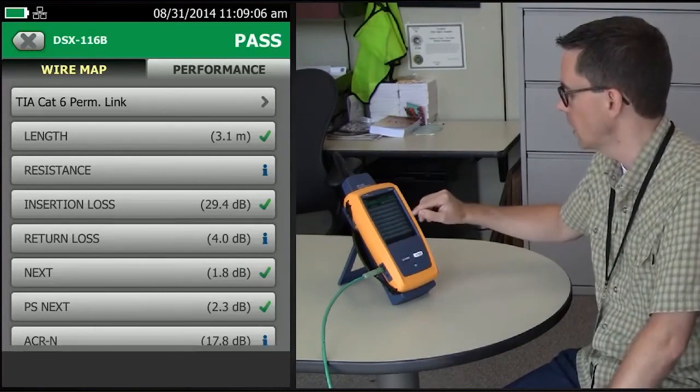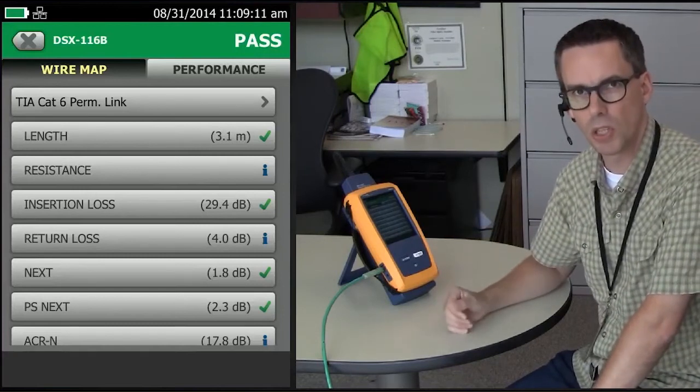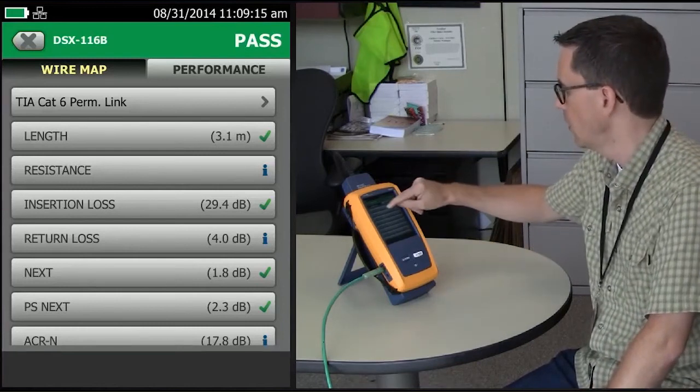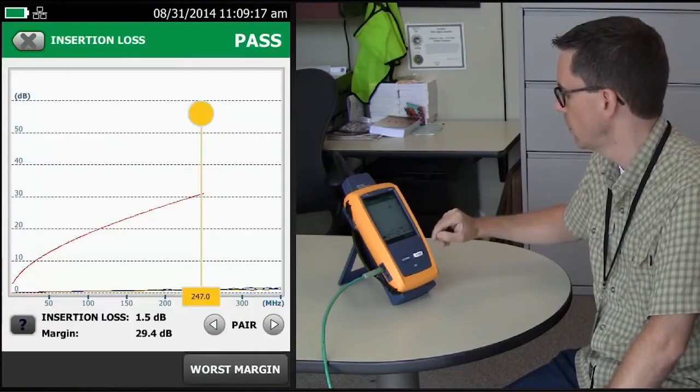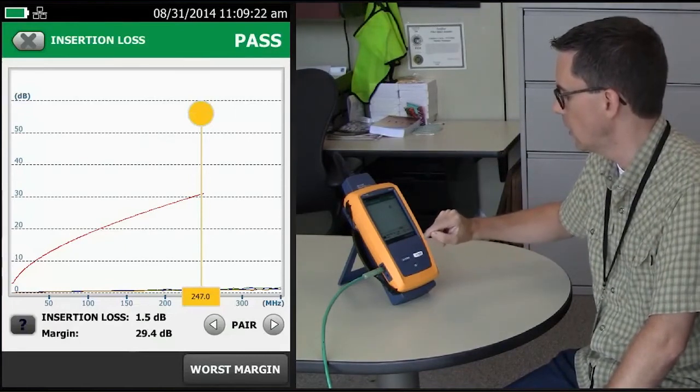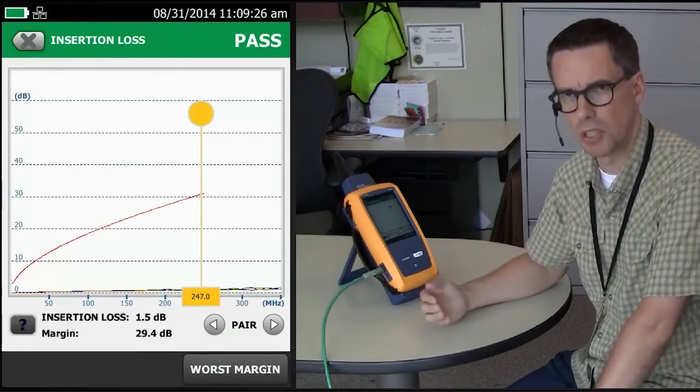And when that happens, the DSX will report an I next to the result to saying, hey, we'll report return loss, but it's for information only. And indeed, if we tap on insertion loss, and it's gone to the worst case value, it's showing 1.5 dB. So it never actually reached 3 dB.